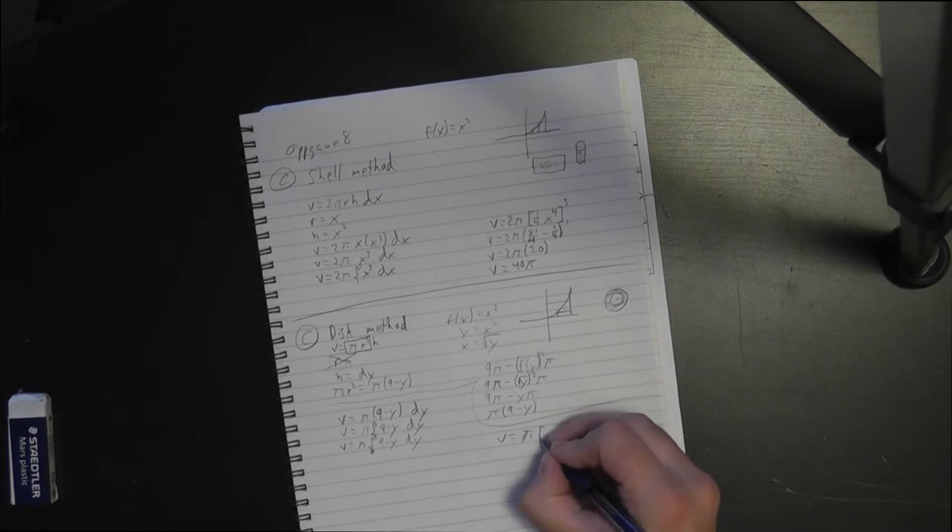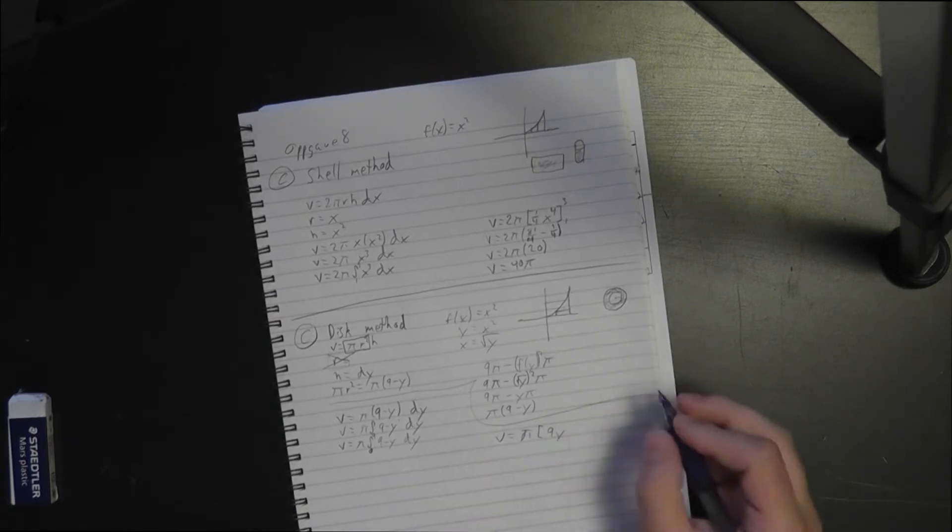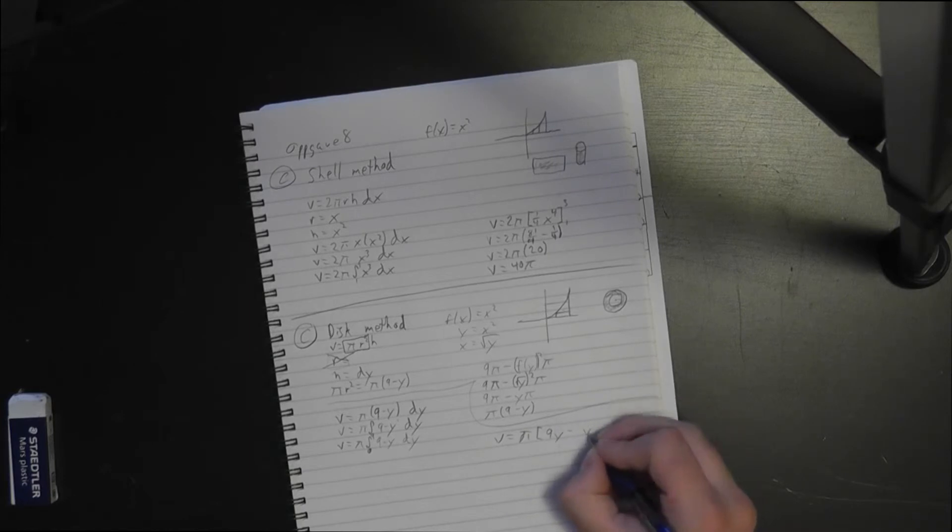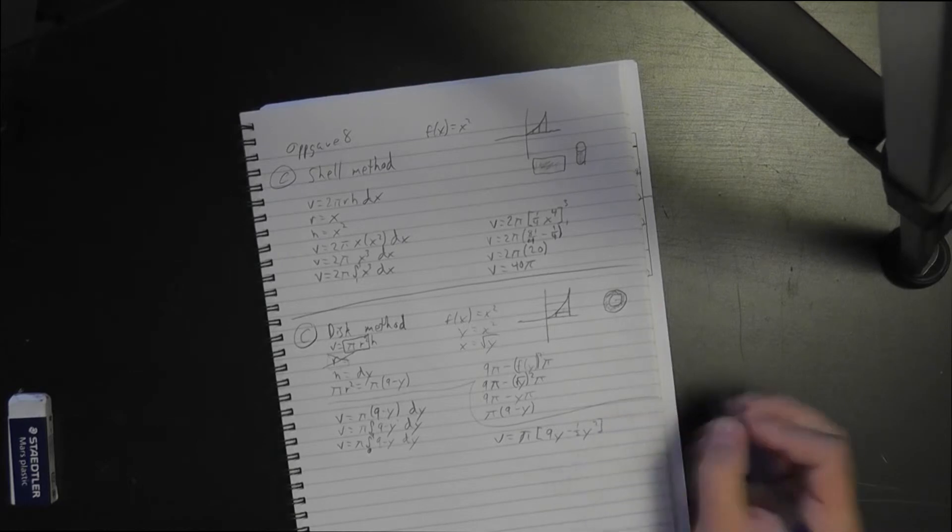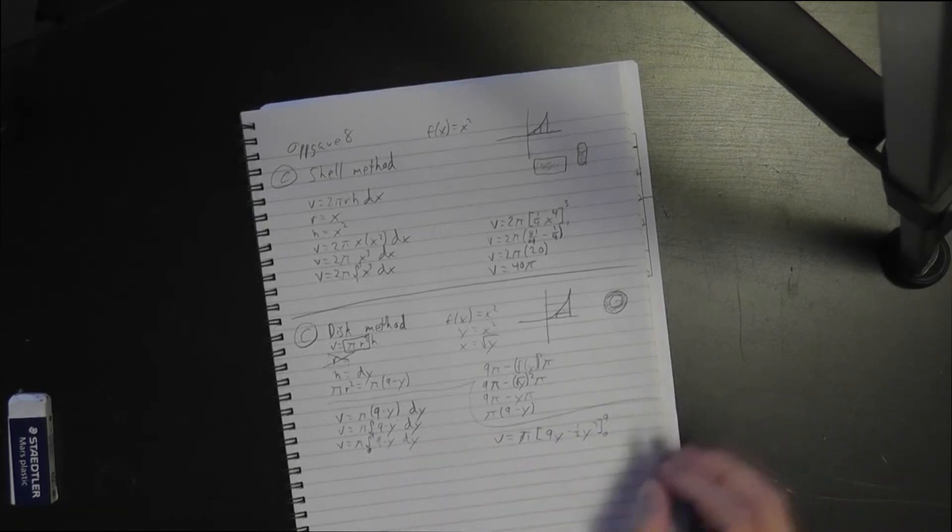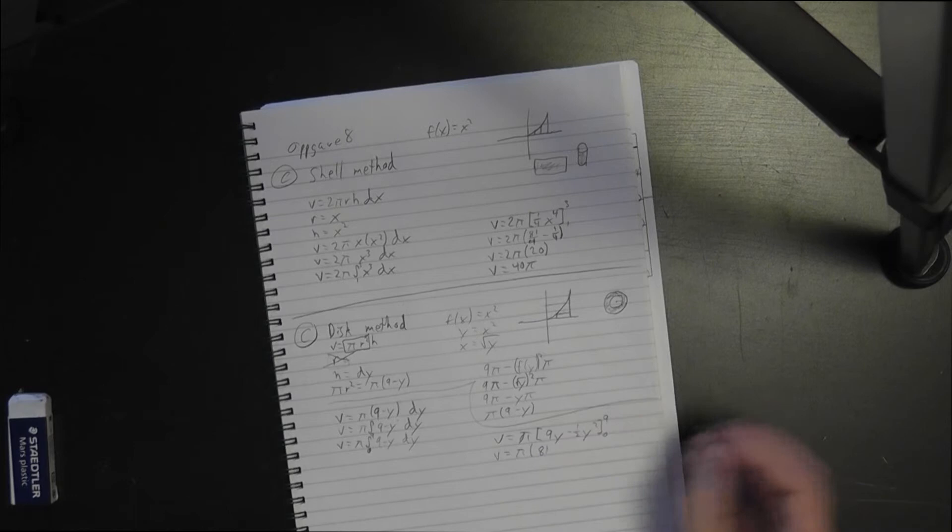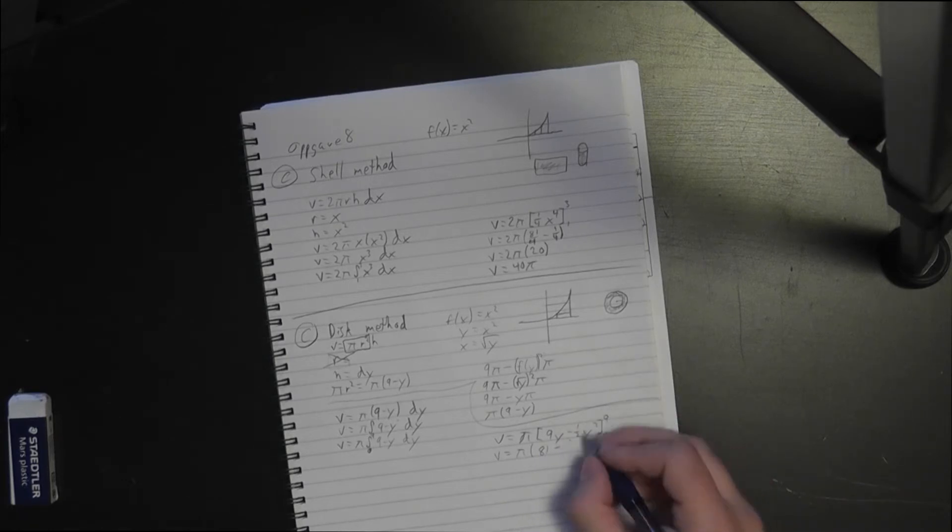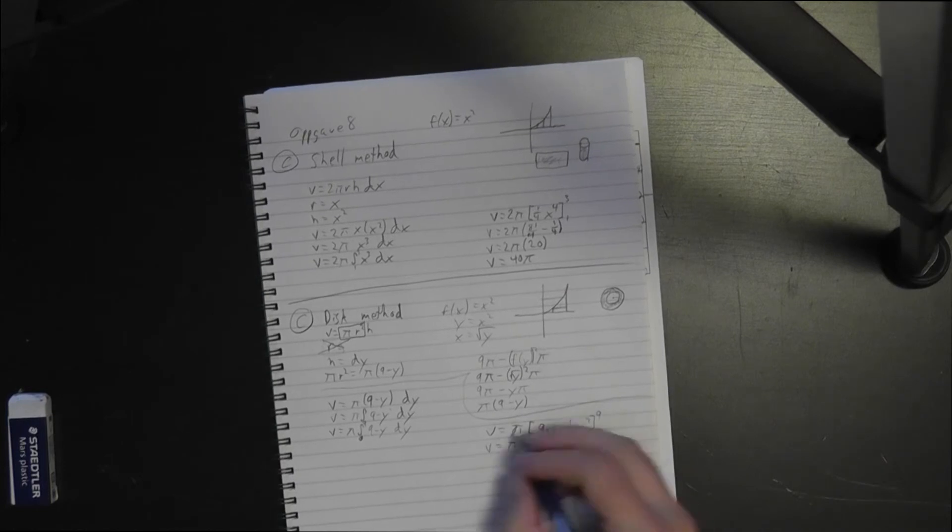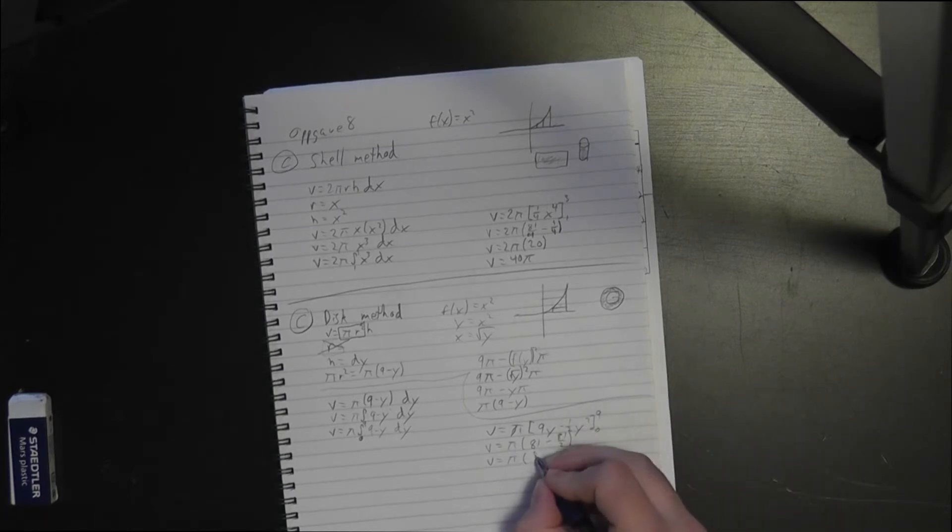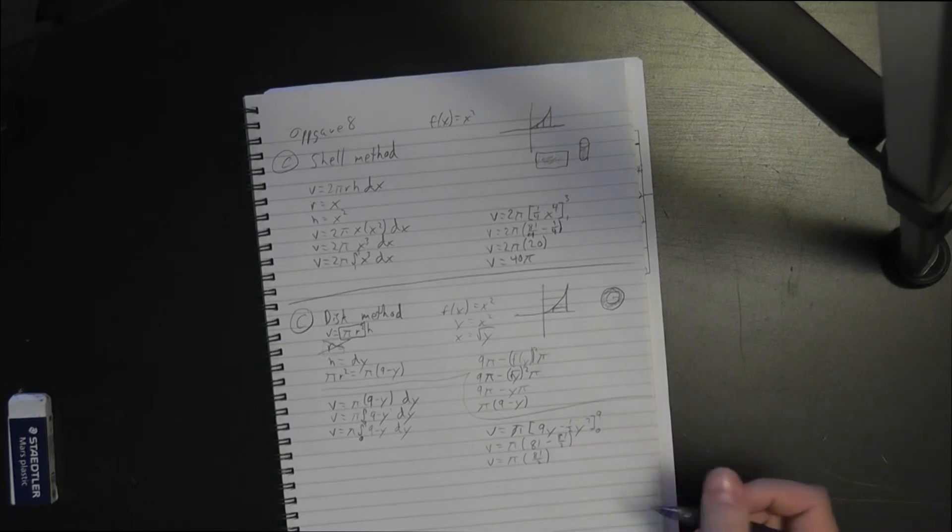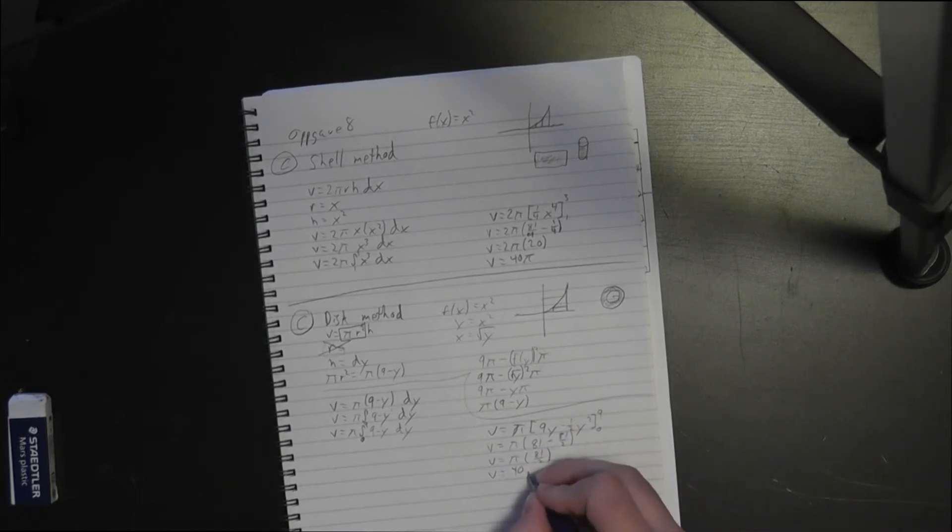When you integrate that, you are going to get the v equals pi. My pies are getting worse for the second. Bracket. Now, what's nine? That just becomes nine y. And then you're going to be subtracting y squared. And of course, that would be half. And then you're going from zero to nine. Zero on this, of course, becomes zero. So we're only looking at the nine value here. So y then equals pi. Nine times nine is 81. And then this is minus, nine times 81 divided by two is 81 over two. And the zero, as I said, doesn't affect anything. So that means that v equals pi times 81 minus 81 over two is just 81 over two. And again, this becomes v equals 40.5 pi.